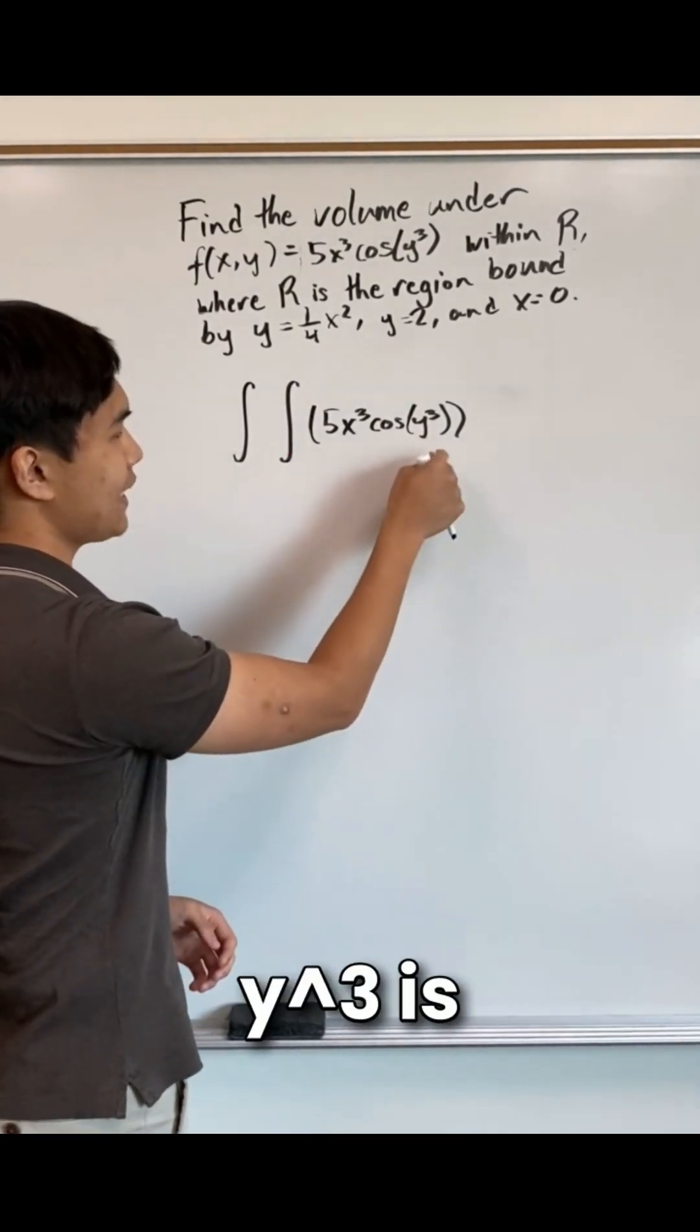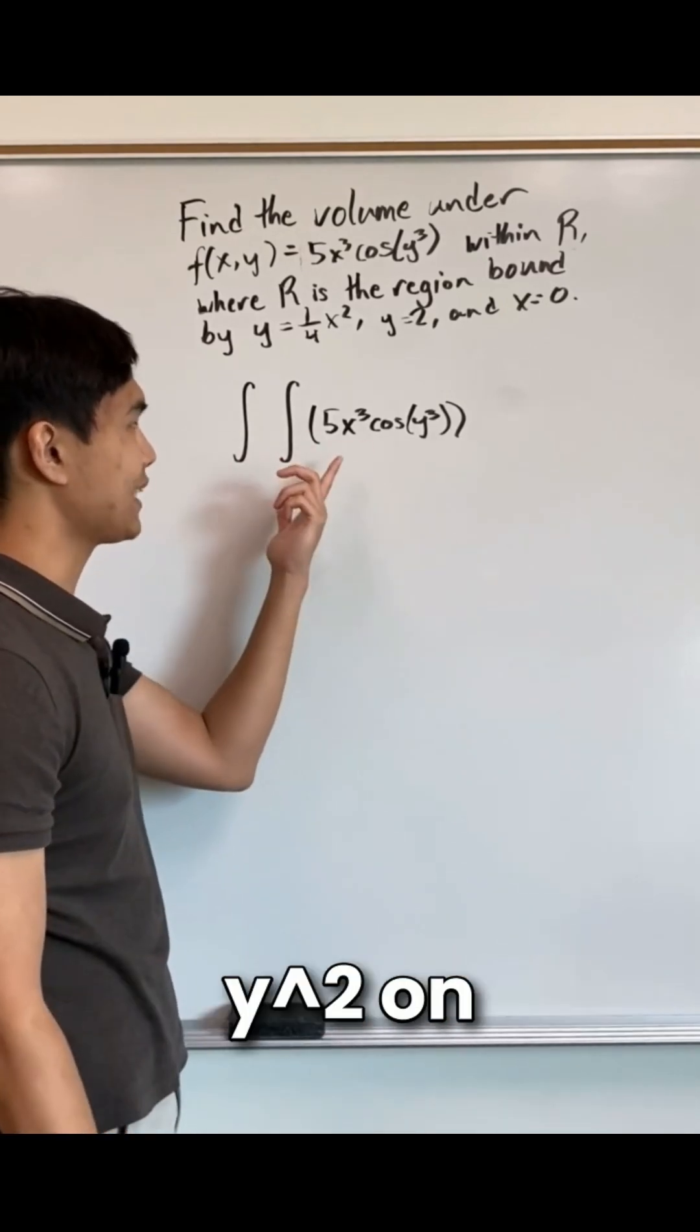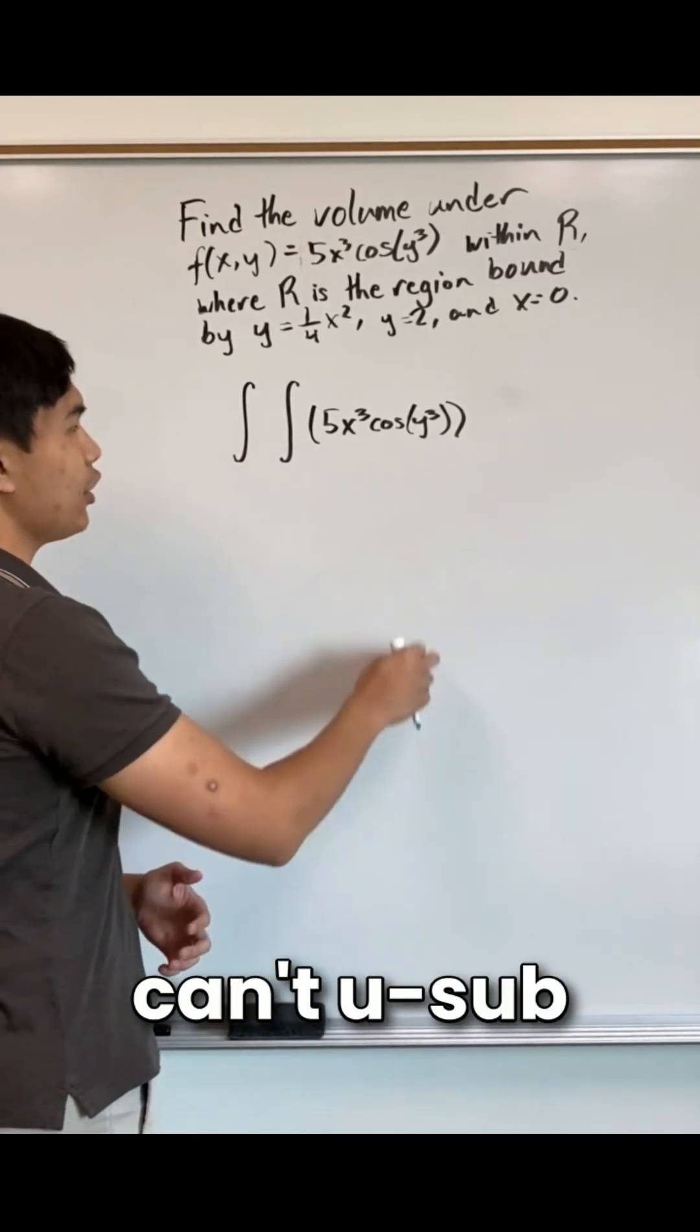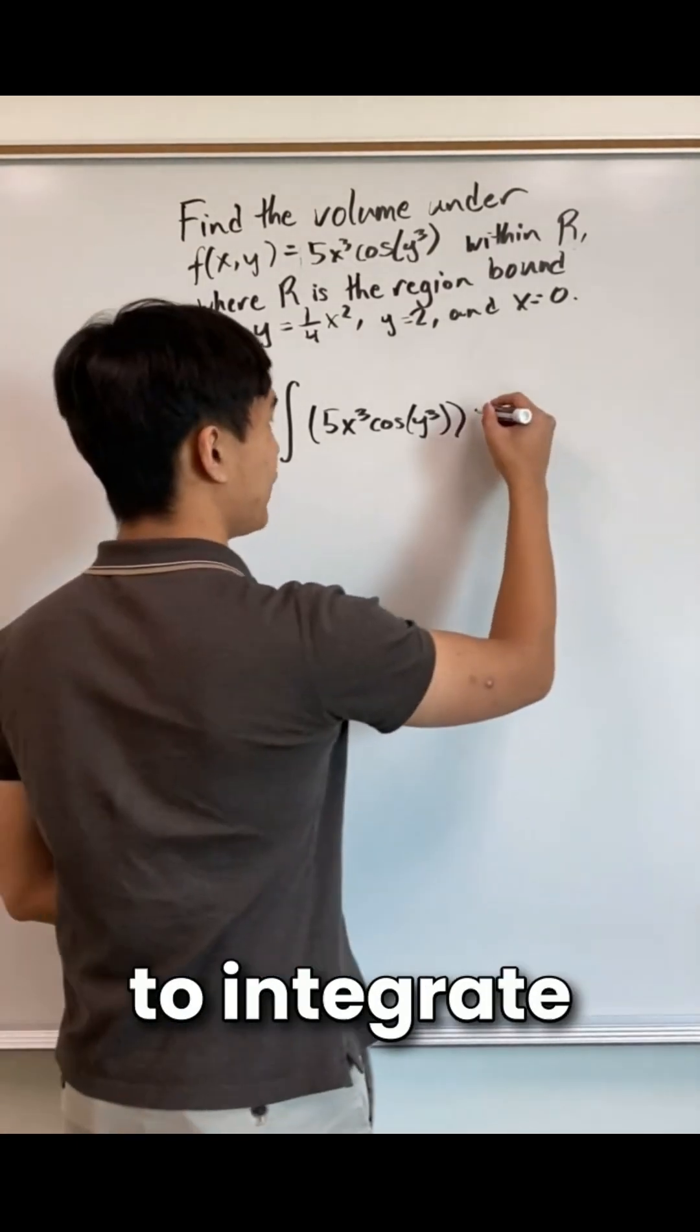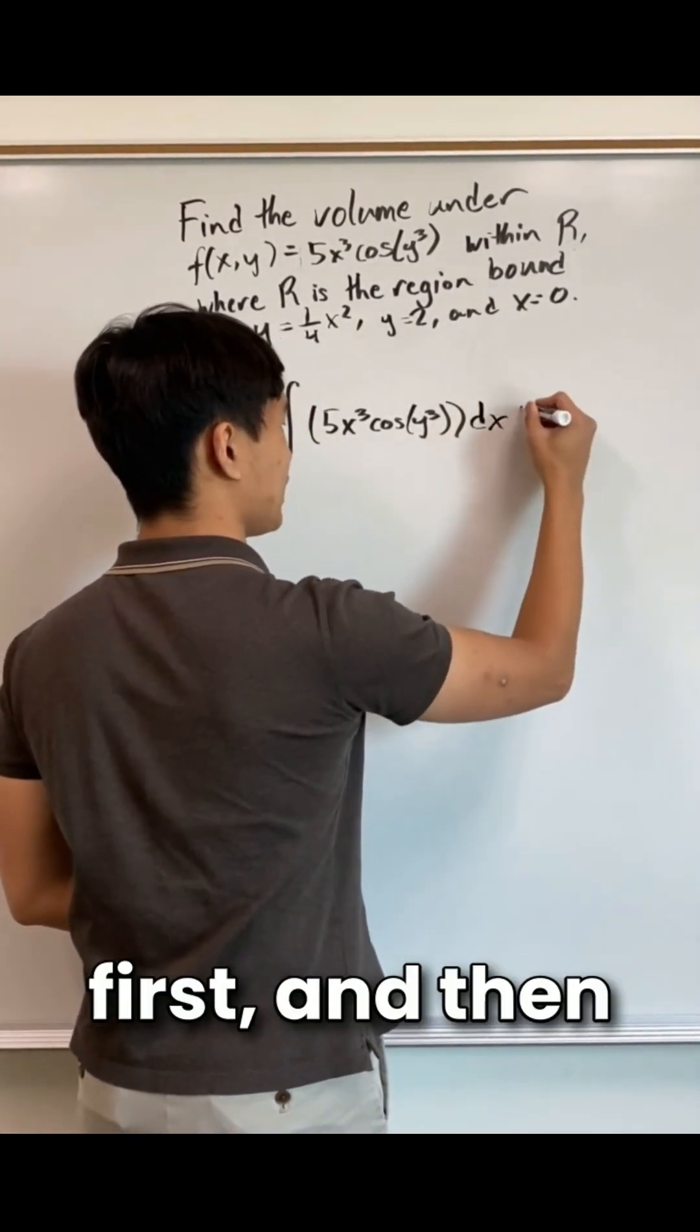Notice that the y cubed is inside the cosine function, and we don't have any y squared on the outside. That means we can't u sub our way out of y, and integrating with y is actually impossible here. So I'm going to integrate with respect to x first, and then y.